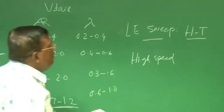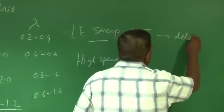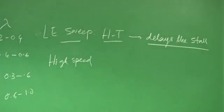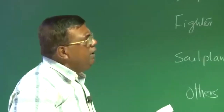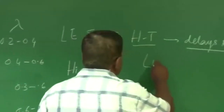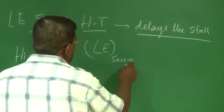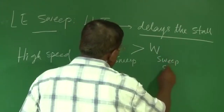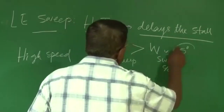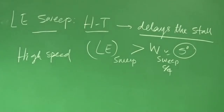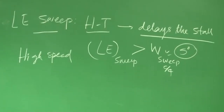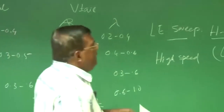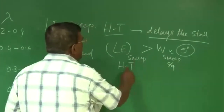There are salient points when you see leading-edge sweep requirements. One point is that it delays stall. For low speed, if you give 10 to 15 degrees, your intent is to delay the stall. Generally, you will find leading-edge sweep of the horizontal tail is greater than the wing sweep at C/4 by roughly 5 degrees. That is, horizontal tail sweep is about 5 degrees more than the leading-edge sweep of the wing measured at C/4. By giving leading-edge sweep to the horizontal tail, you are trying to delay the stall so that the tail stalls later than the wing.